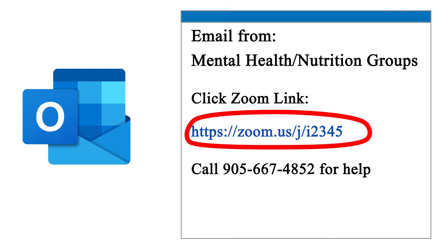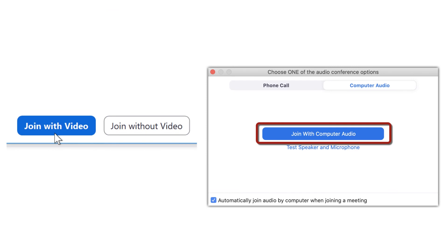Just before the group begins, open the email from us with the Zoom invitation. Click the link and a new window will pop up to ask you if you want to join with or without video. We ask that you join with video. Another window will pop up asking if you would like to join with your computer audio. Select join with audio. And now you have joined the first group meeting.